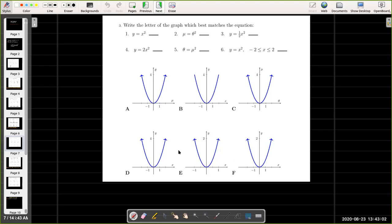So for example, on graph D, one point on the graph has coordinates 2 comma 4. In graph E, there's a point on the graph with coordinates 1 comma 2. And in graph F, there's a point on the graph with coordinates 2 comma 2.